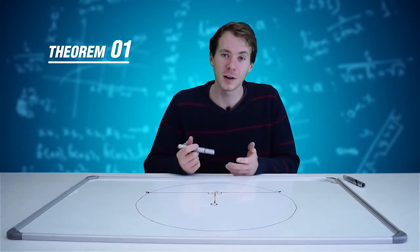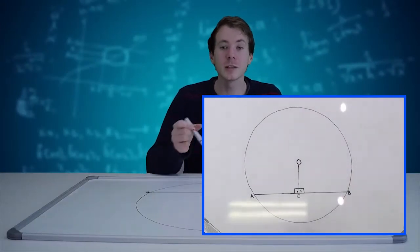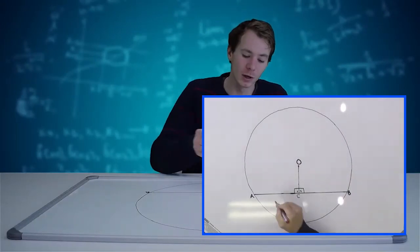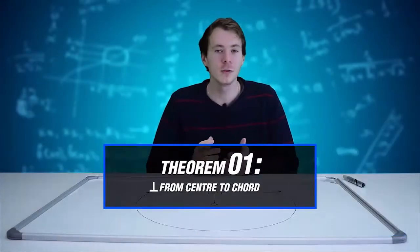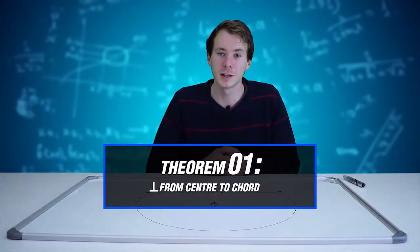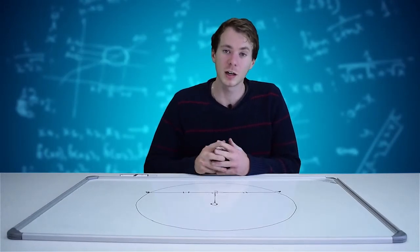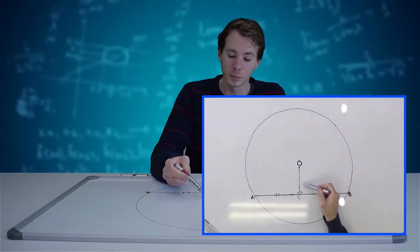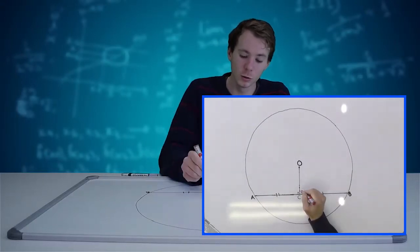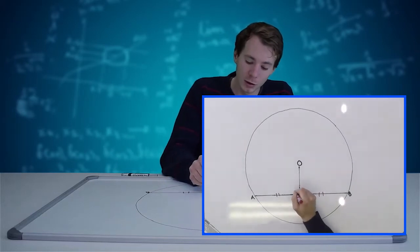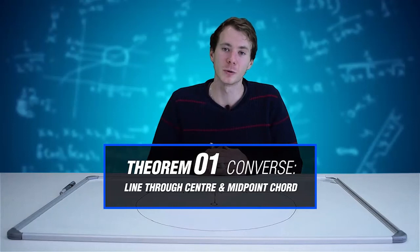Theorem 1 states that if I take a line from the center of the circle perpendicular to a chord, it bisects that chord, and therefore line AC is equal to line CB. The reason for that is: perpendicular line from center to chord. Theorem 1's converse states that if I take a line from the center of the circle to the midpoint of that chord, then that line is perpendicular, and C2 and C1 are 90 degrees. The proof is: line from center to midpoint of chord.